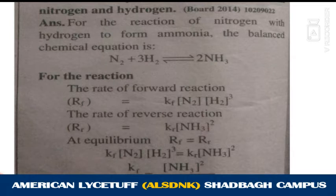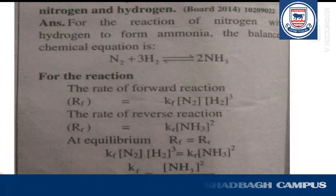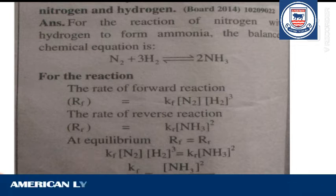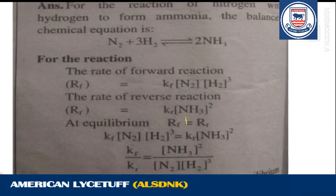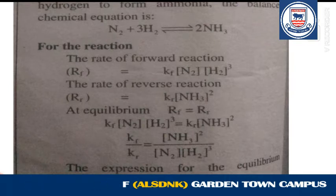For the equilibrium constant expression, first write the forward reaction rate RF, which is proportional to the molar concentration of reactants. Then write the reverse reaction rate, proportional to the molar concentration of products. The equilibrium constant Kc equals the product concentration over the reactant concentration, with coefficients written as powers in the molar concentration brackets.